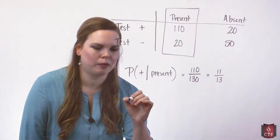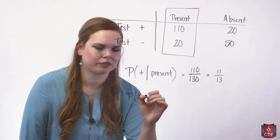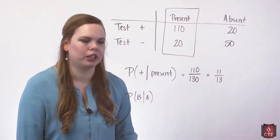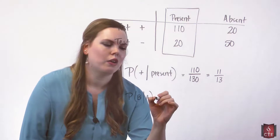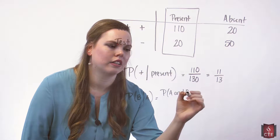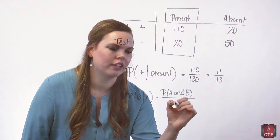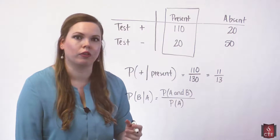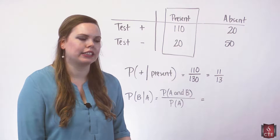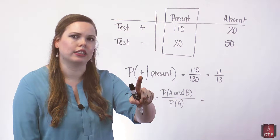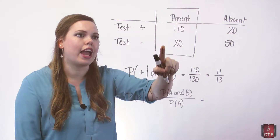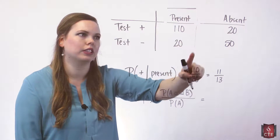If we wanted to use the formula, let me write up the conditional probability formula. The probability of B given A equals the probability of A and B over the probability of A. So this is the conditional probability formula, and it does work in this case as well. The probability of A and B in this case will be the probability that the person tested positive and the condition was present. When we are dealing with this formula, we are out of everybody — out of all 200 people. Let me remove this box.